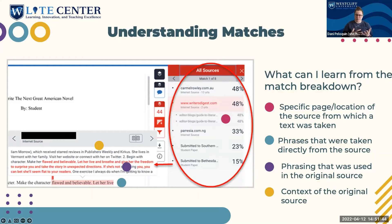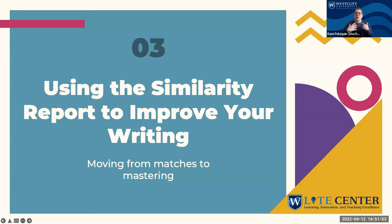Now that we know how to identify similarity and understand what the matches mean in our paper, let's talk about how we can use this to improve our writing. Because at the end of the day, this is a tool — and the tool isn't meant to be a gotcha. It's not meant to say you plagiarized and therefore we're giving you a zero. It's a tool really meant to help us look at what we're writing and better improve our writing and our research, not just in general but our practices as a whole.